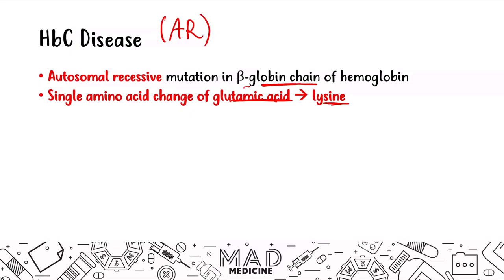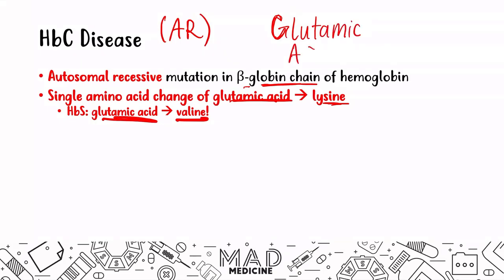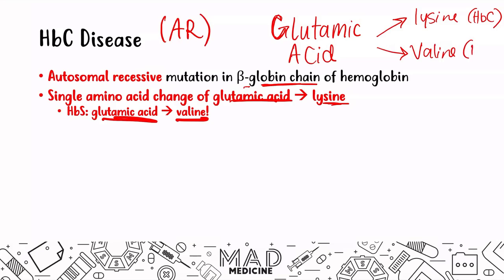Remember, in hemoglobin S or sickle cell anemia, you're going to have a change of glutamic acid to valine. So in both hemoglobinopathies, glutamic acid is the starting point. If it goes to lysine, you are going to have HbC. If it goes to valine, you are going to have hemoglobin S — sickle hemoglobin. The way I always remembered it: L comes earlier in the alphabet than V, so lysine gives hemoglobin C which comes before S, and valine gives hemoglobin S.